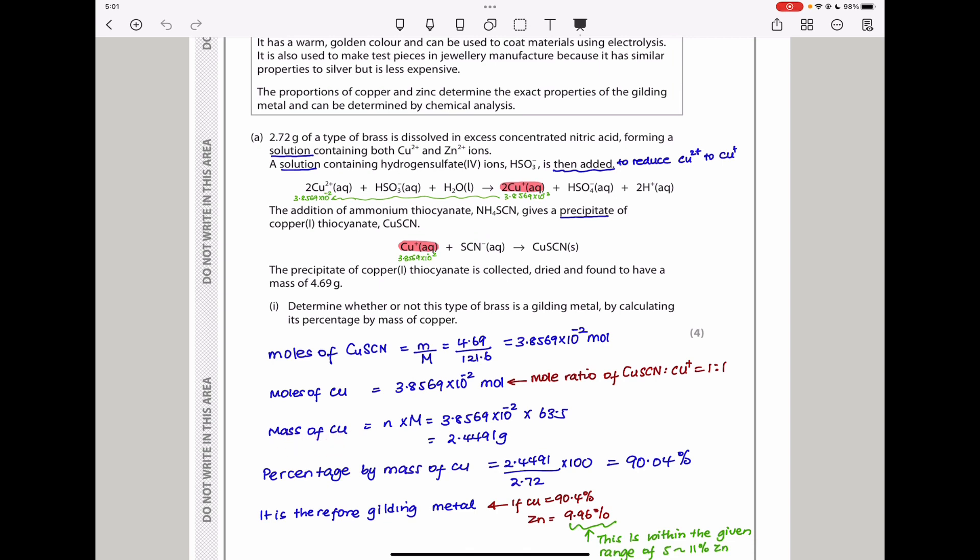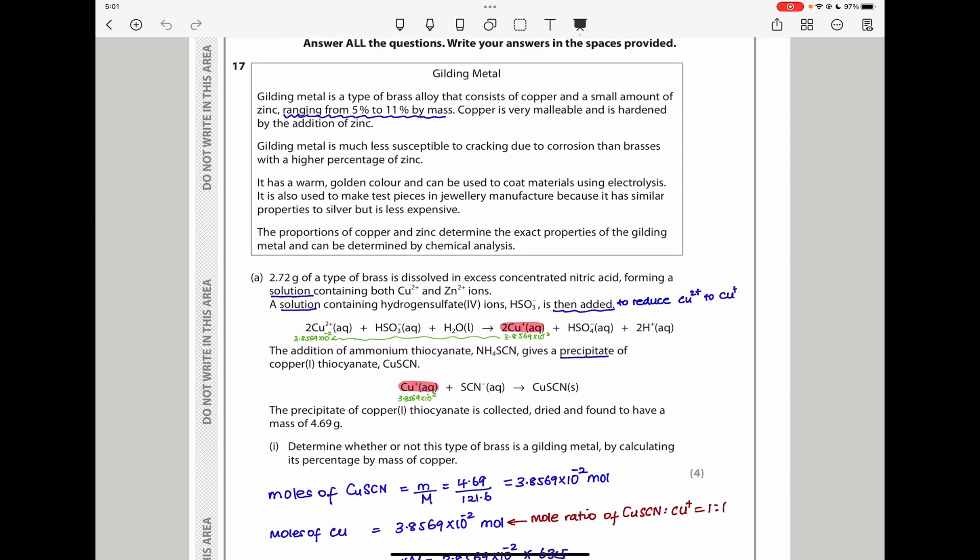The mass of copper is number of moles times molar mass, which gave me 2.4491 grams. That is the mass of copper in the sample of brass. The percentage by mass of copper is mass of copper divided by the total mass of the alloy times 100, which gave me 90.04%.